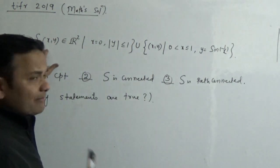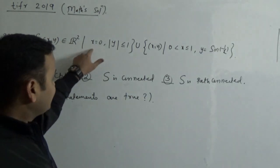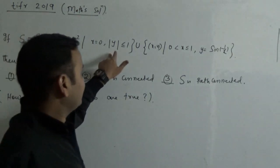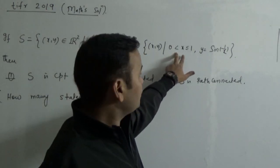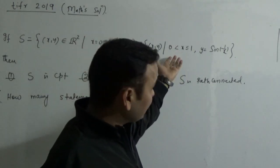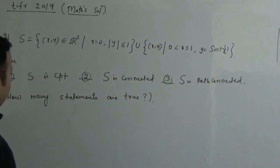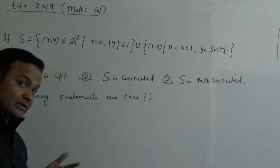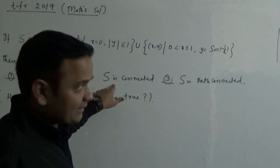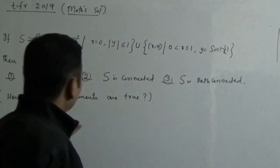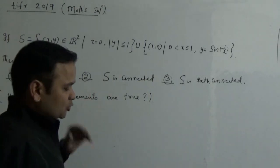This is the question: we have the set S of pairs (x, y) belonging to R², such that x is in (0, 1] and y is equal to sin(1/x). They are asking what you can say about this set S — is it compact, connected, path connected? The exact question was: how many statements are true?